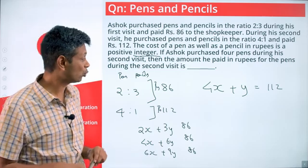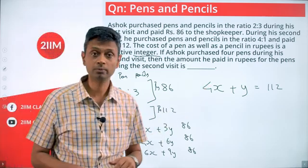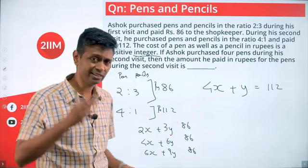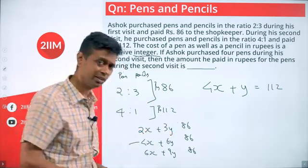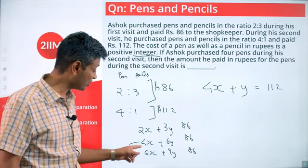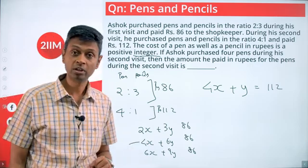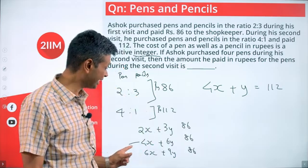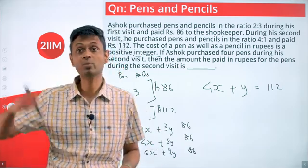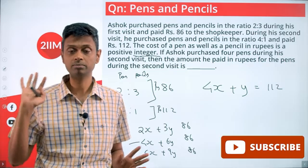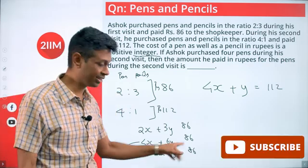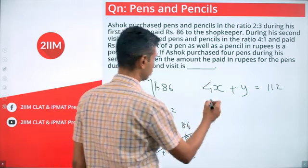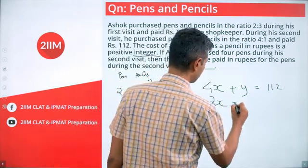4 pens plus 1 pencil cost 112. 2 pens and 3 pencils costing 86. Think about it - 4 pens and 6 pencils... 4 pens and 1 pencil cost 112, 4 pens and 6 pencils has to cost more. Pencils cost positive integer, it cannot cost less. Therefore I can ignore all of this. My two equations are 4x+y=112 and 2x+3y=86.